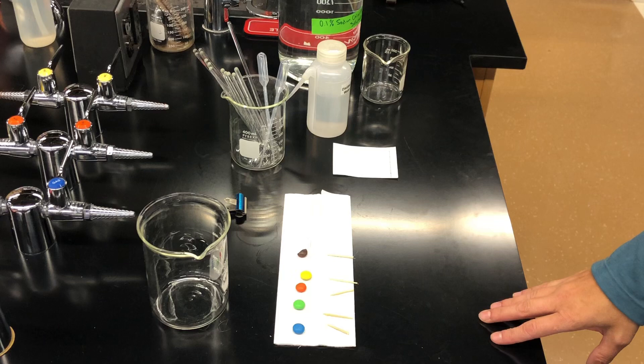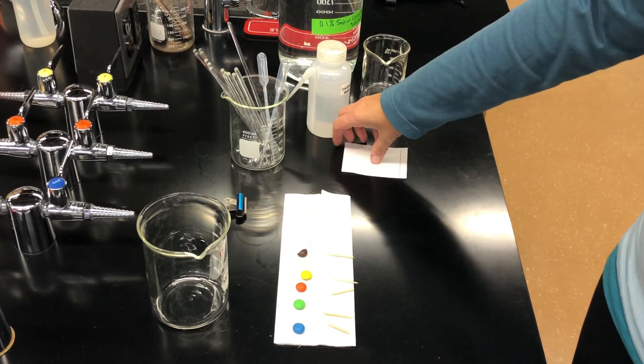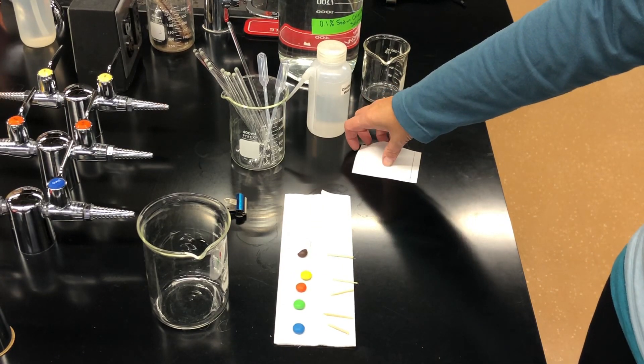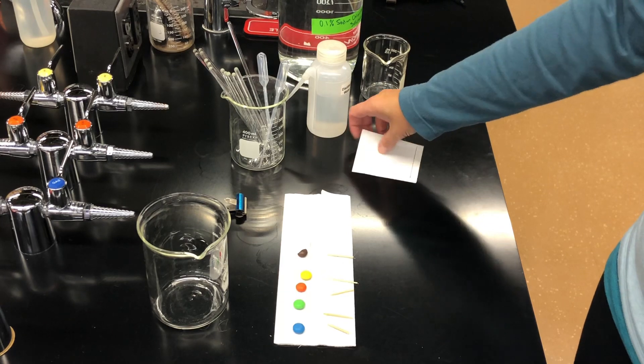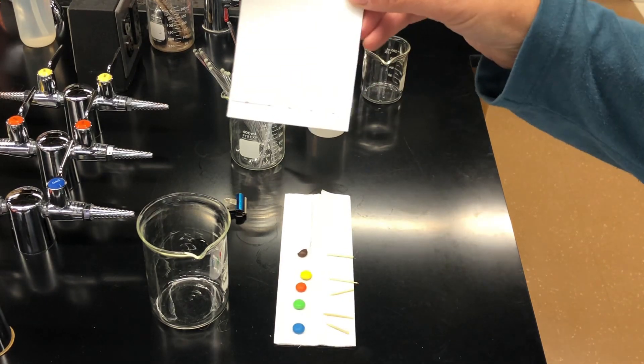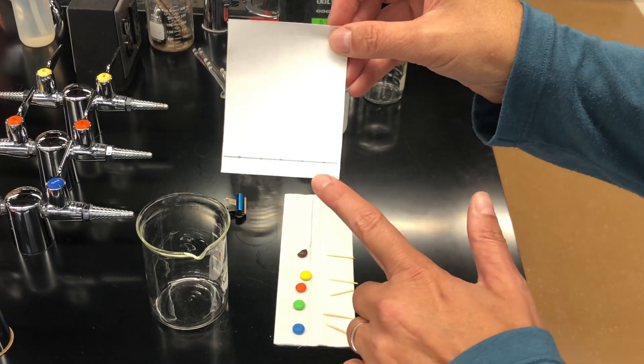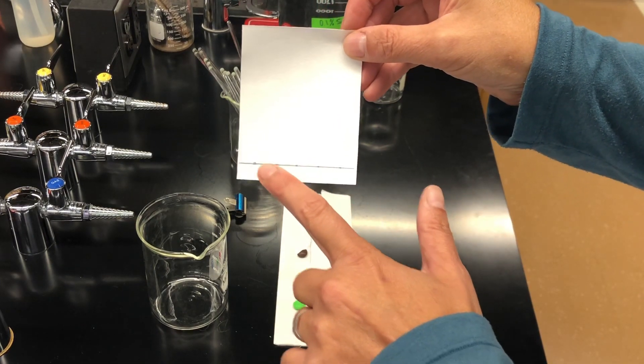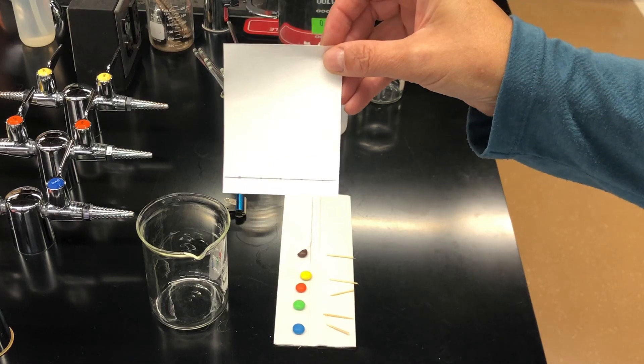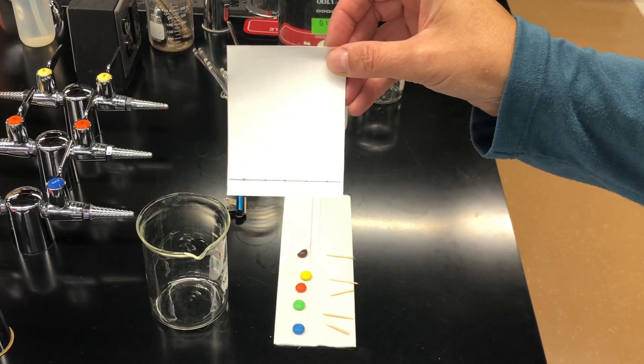Step one, obtain a piece of chromatography paper. Make a line across the bottom using a pencil. There you go. I've already done that. See my line? And I have placed small dots on the line so that I know where to put my marks.